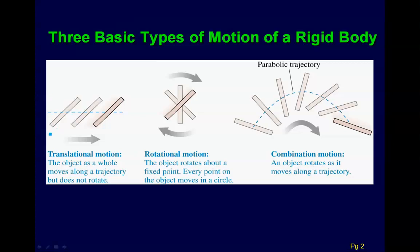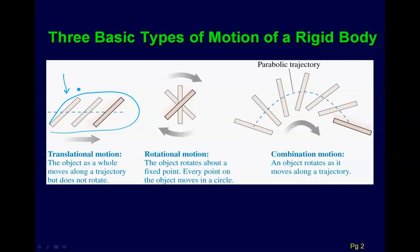Up to this point we've talked primarily about what we can call translational motion. Here we have a ruler or something, and in this picture it's just moving translationally or linearly. The object as a whole moves along a trajectory, but it does not rotate.